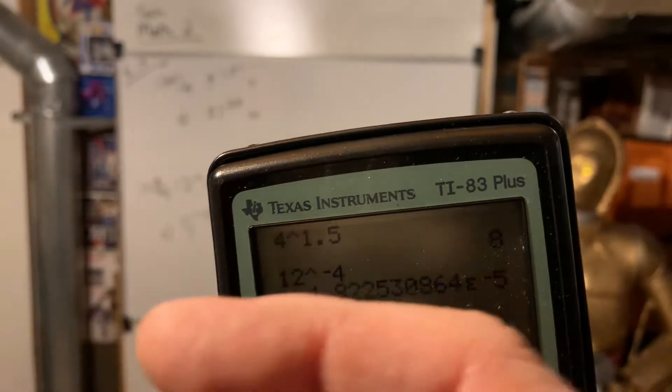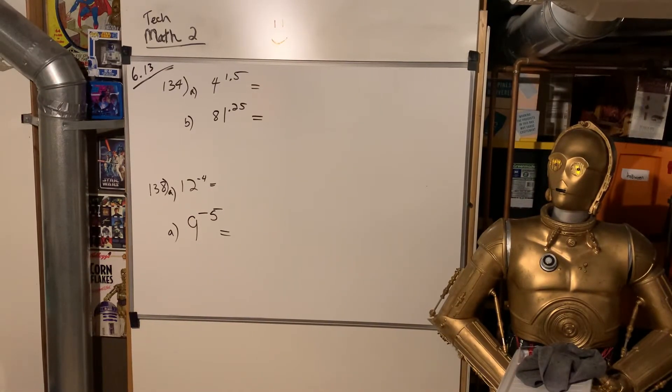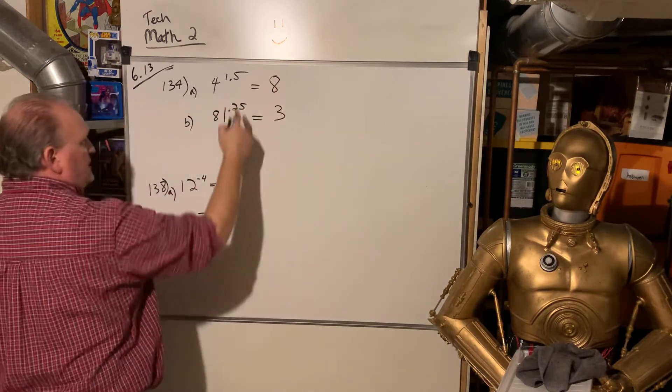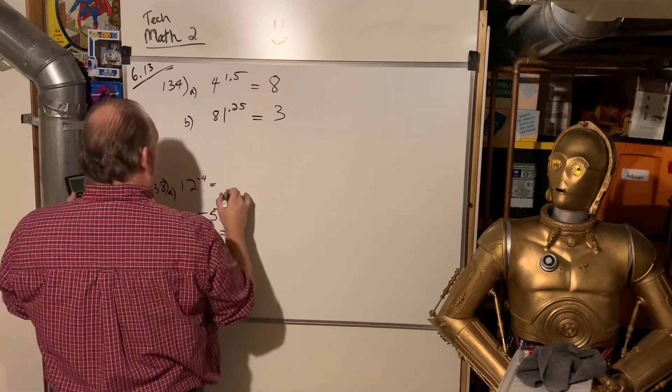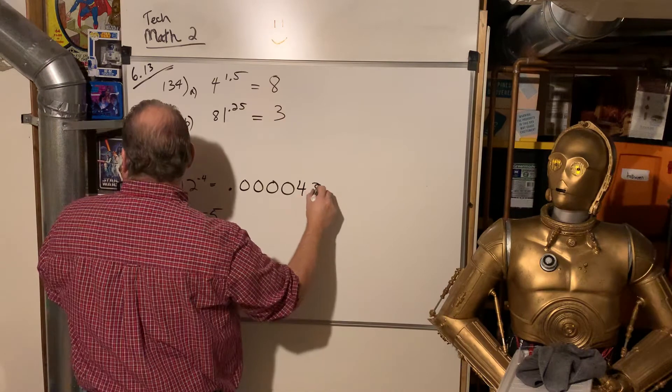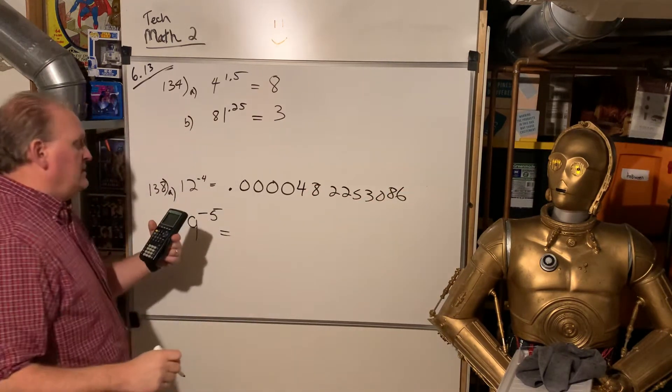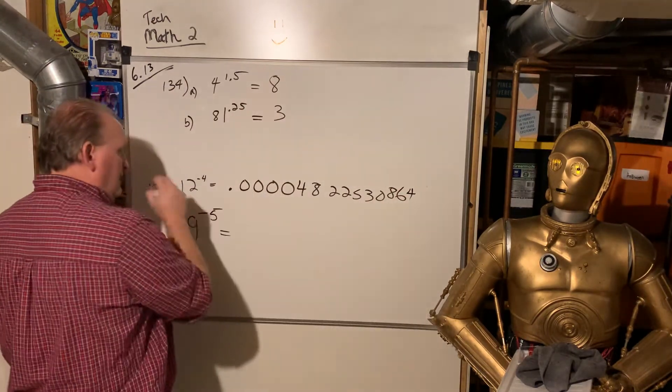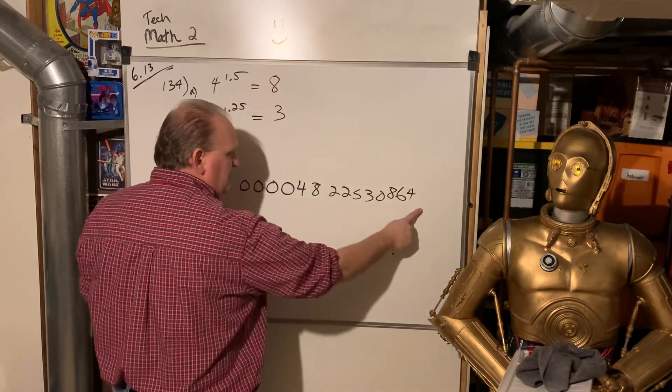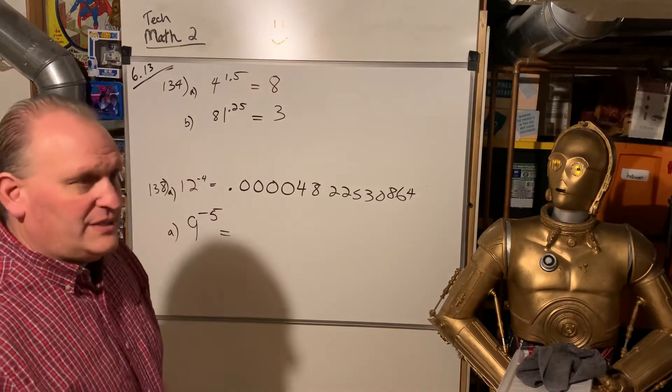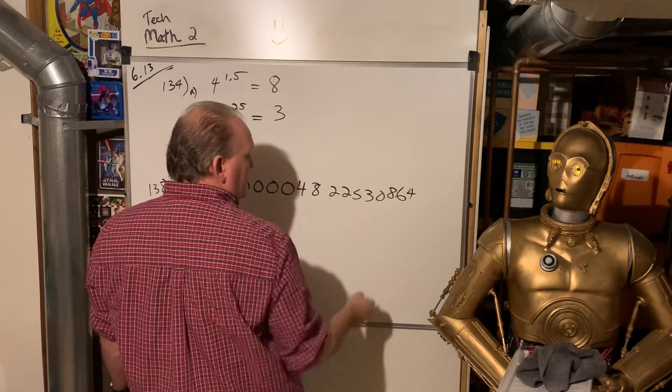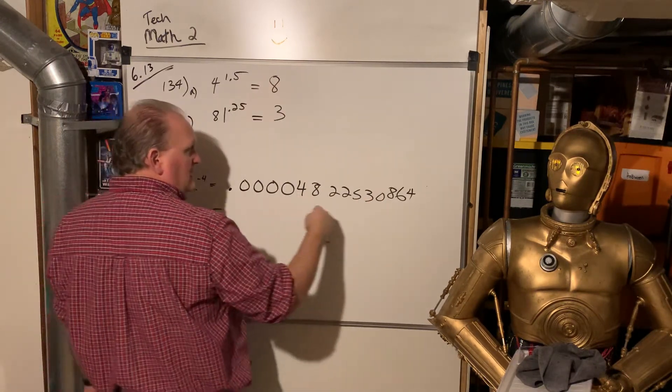This negative 5 is like that scientific notation. That means 10 to the negative 5th power. So you actually have to count 5 decimal places in that direction when you're writing this one down. So let me show you what that looks like. On the first ones here, this was just 8. This one was just 3. So those were pretty easy. This one, 12 to the negative 4, is actually 0.0000. There's 4 zeros, and then 4, 8, 2, 2, 5, 3, 0, 8, 6. The reason your calculator does this is because it doesn't want to waste up all of the room with a bunch of zeros. It wants to give you this information about the number.